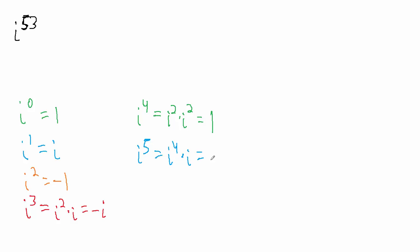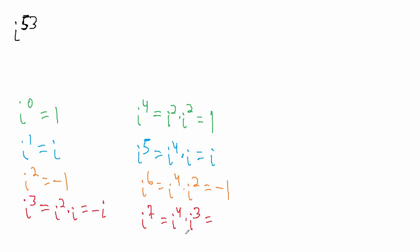i to the fifth is i to the fourth times i to the first. i to the fourth we already know is one, so this is one times i, which is i. What about i to the sixth? i to the sixth is i to the fourth times i squared. i to the fourth is one, i squared is negative one, so this is one times negative one, which is negative one. And i to the seventh is i to the fourth times i to the third — that's one times negative i, which is negative i. Now we see a pattern forming: one, i, negative one, negative i.